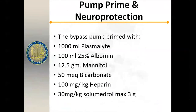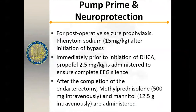The perfusionist uses bypass solutions for circulatory arrest: plasmolyte, 25% albumin, mannitol, bicarbonate, heparin, and solumedrol in the prime. For neuroprotection, we give phenytoin intraoperatively for seizure prophylaxis and propofol 2.5 mg/kg immediately prior to circulatory arrest. After completion of the endarterectomy and upon resuming circulation, we give methylprednisolone 500 mg and mannitol to stabilize membranes and reduce the risk of brain edema.